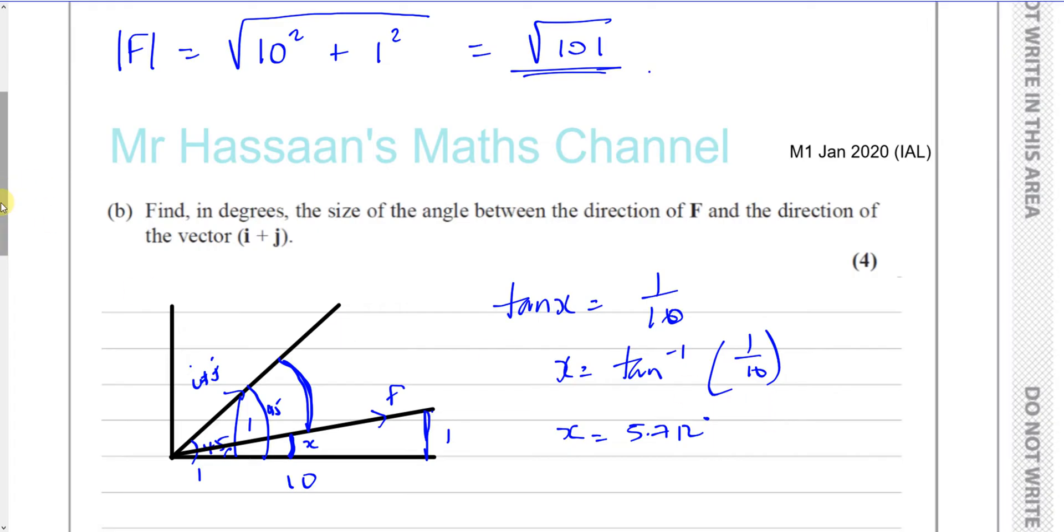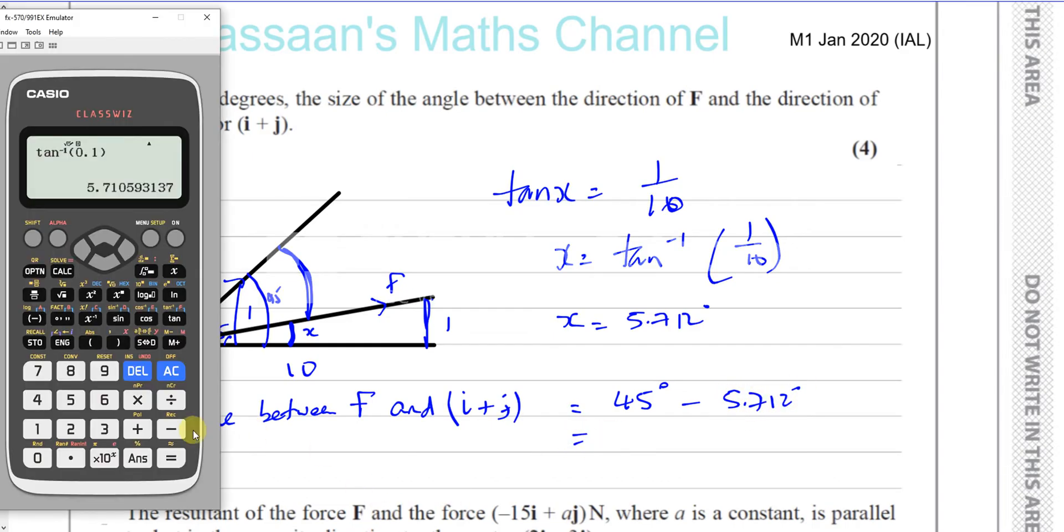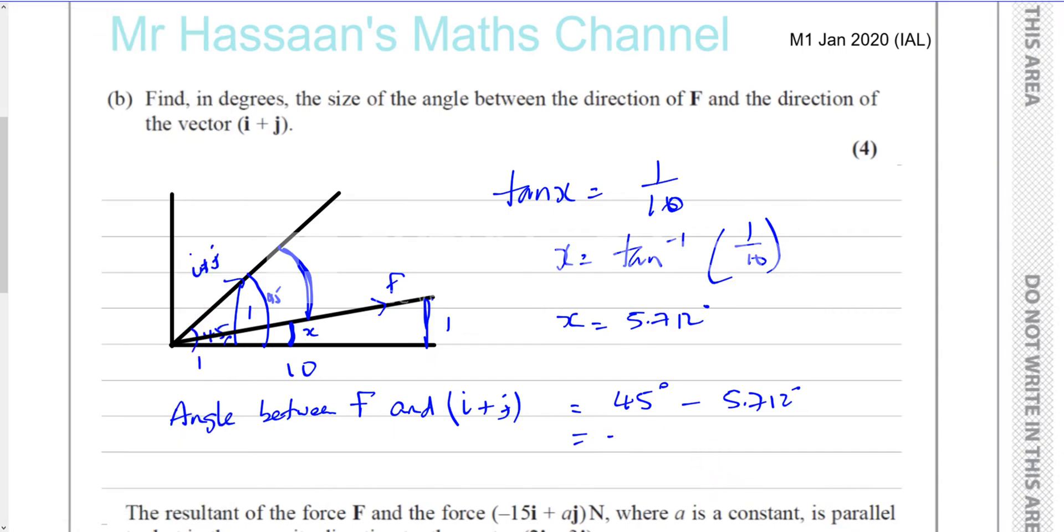Well, that's not the angle that we're looking for. We're looking for this angle over here. Okay, so the angle that we're looking for is going to be 45. So, the angle between F and direction of i plus j is equal to 45 degrees minus 5.712 degrees. So, we just take away that from 45. 39.289 degrees.